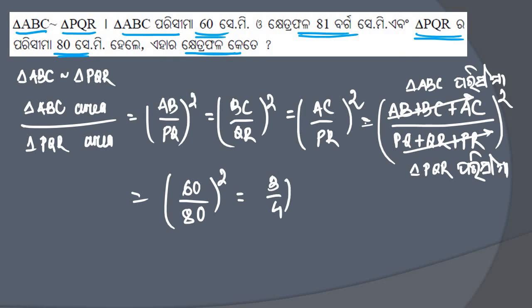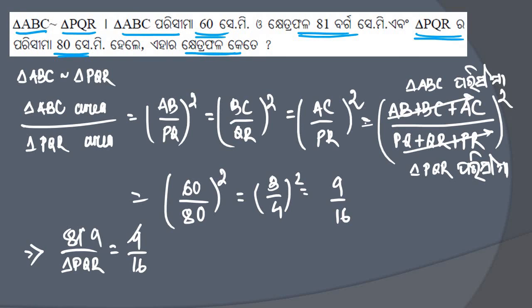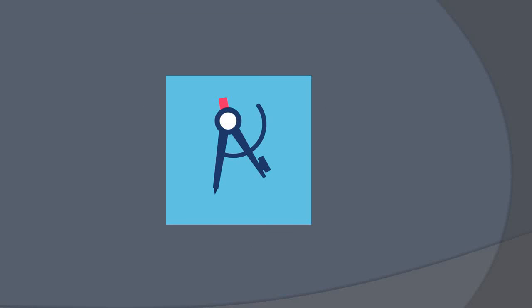So the ratio of perimeters is 60 by 80, which equals 3 by 4. Therefore the area ratio equals 3 divided by 4 whole square equals 9 by 16. Since triangle ABC area is 81cm², we have 81 divided by PQR area equals 9 by 16, so PQR area equals 16 times 81 divided by 9 equals 144 cm². That completes question number 2 with bit numbers 5, 6, and 7. Thank you for watching and see you in the next one.